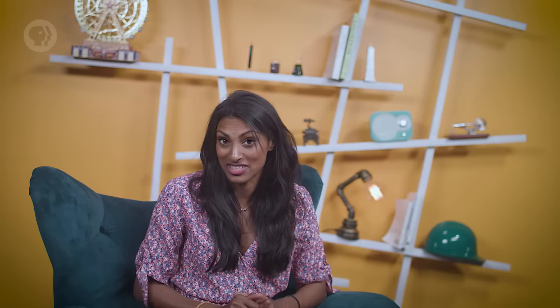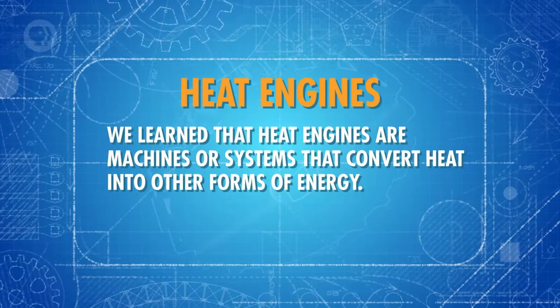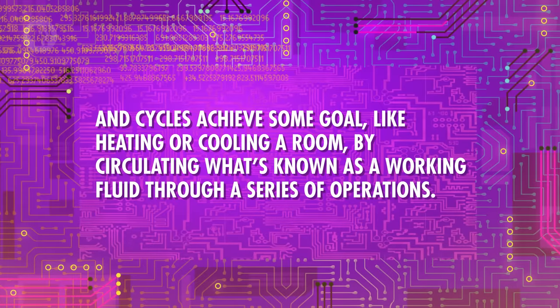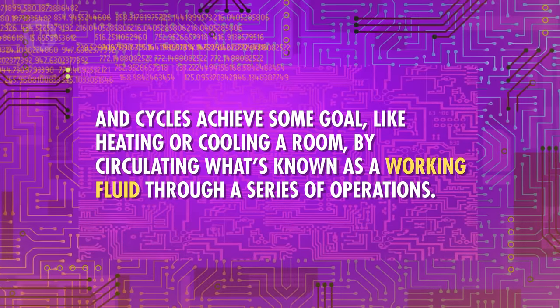So how do refrigeration cycles work? Well, it's easier to understand if we start with something similar that we already know a bit about: heat engines. Heat engines are machines or systems that convert heat into other forms of energy. A basic heat engine can do this by taking in heat at a higher temperature from, say, solar energy or a furnace, and then converting part of that heat to work, usually by rotating a shaft. The engine then releases wasted heat at a lower temperature, maybe into its surroundings or a water supply, and then readies itself to start over again. Heat engines operate on a cycle, and cycles achieve some goal by circulating a working fluid through a series of operations. This working fluid will absorb and release energy, change from liquid to vapor and back again, and continue to circulate through the cycle.